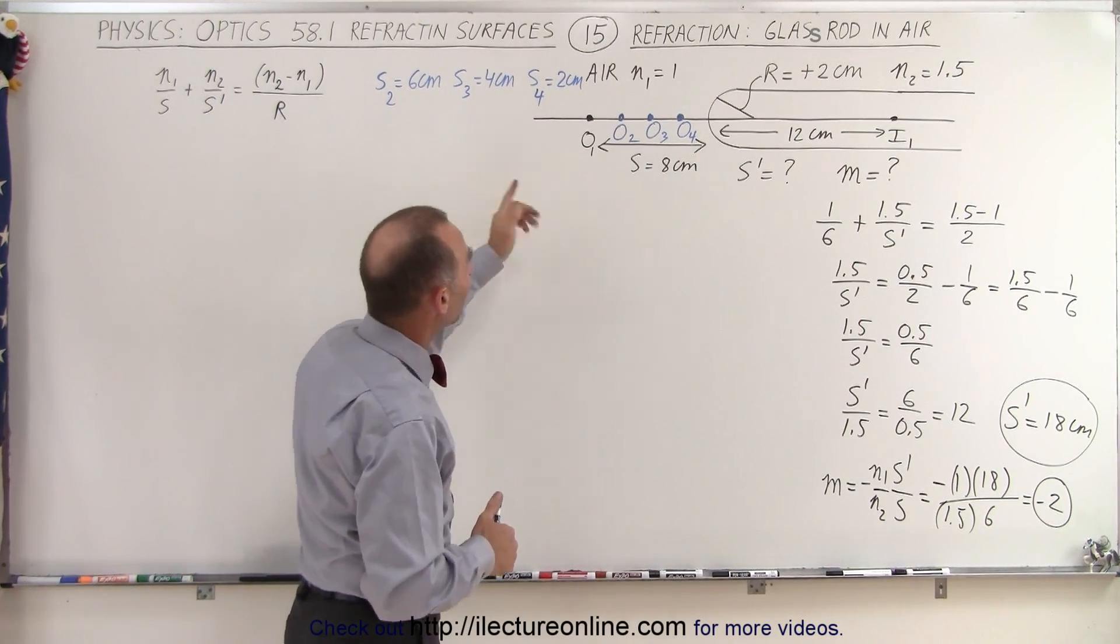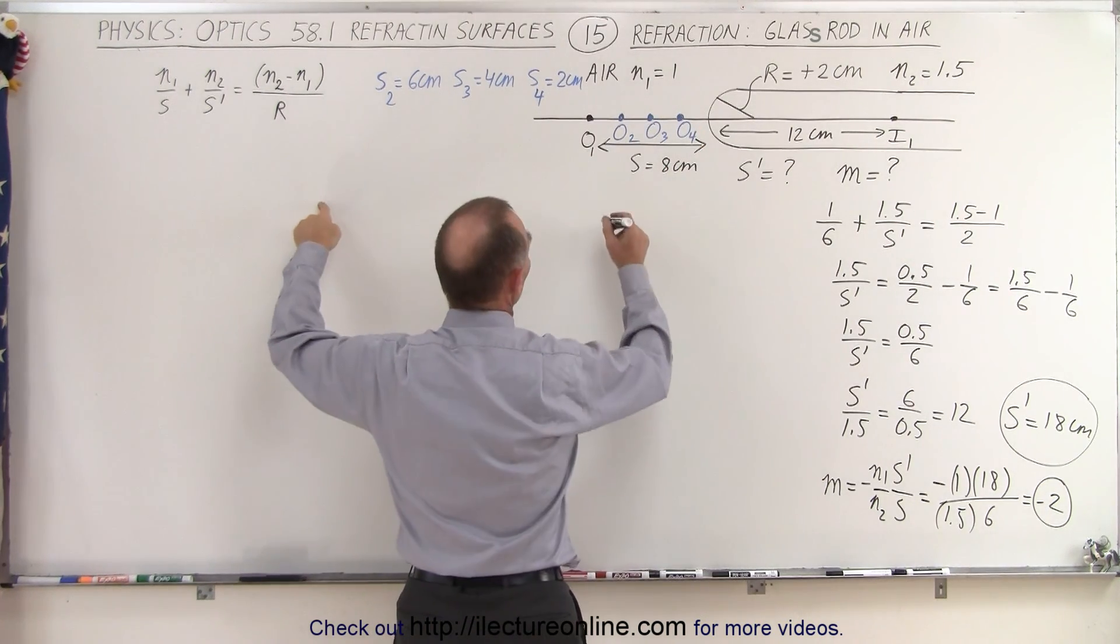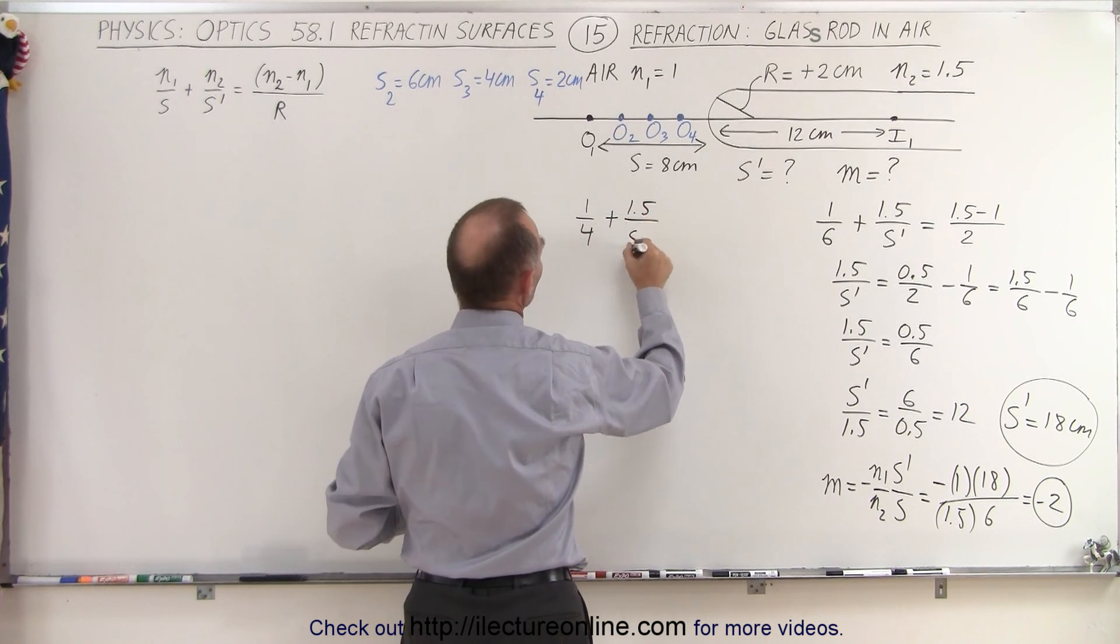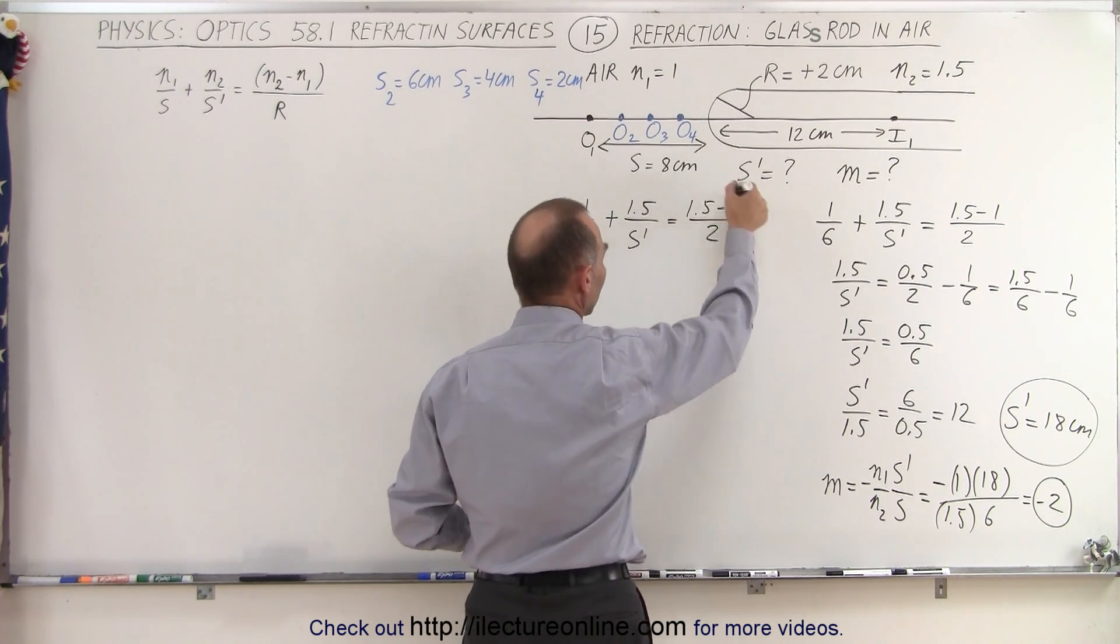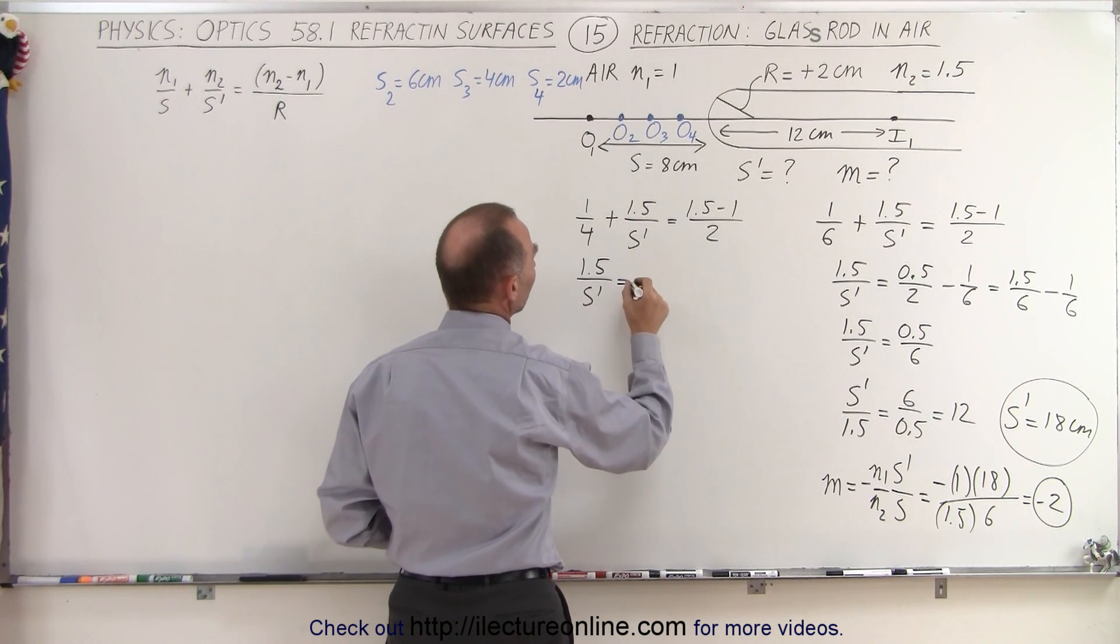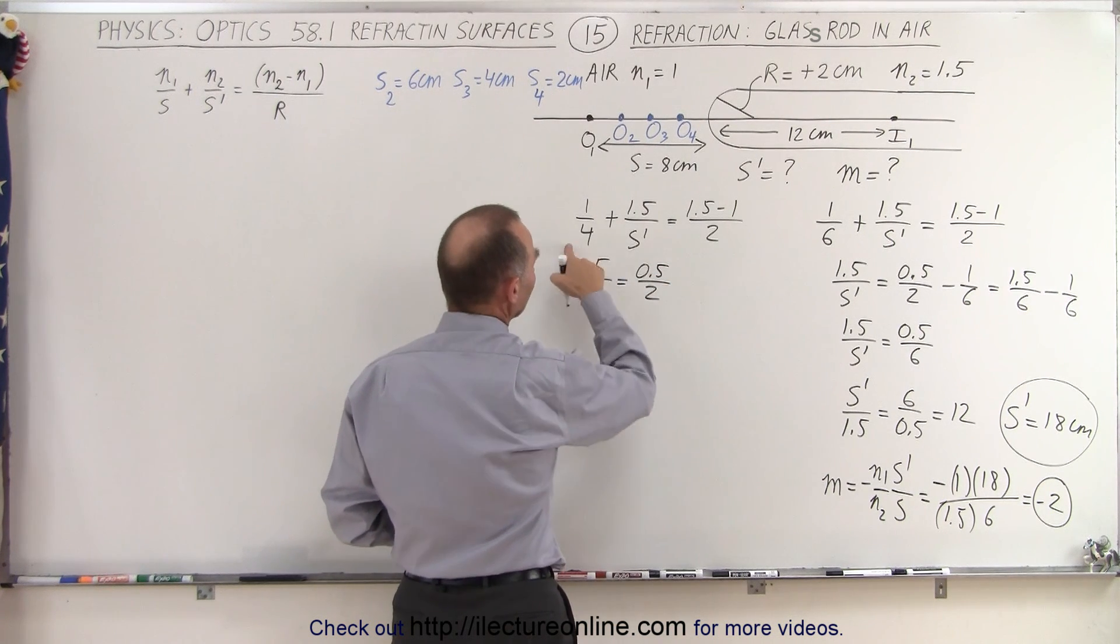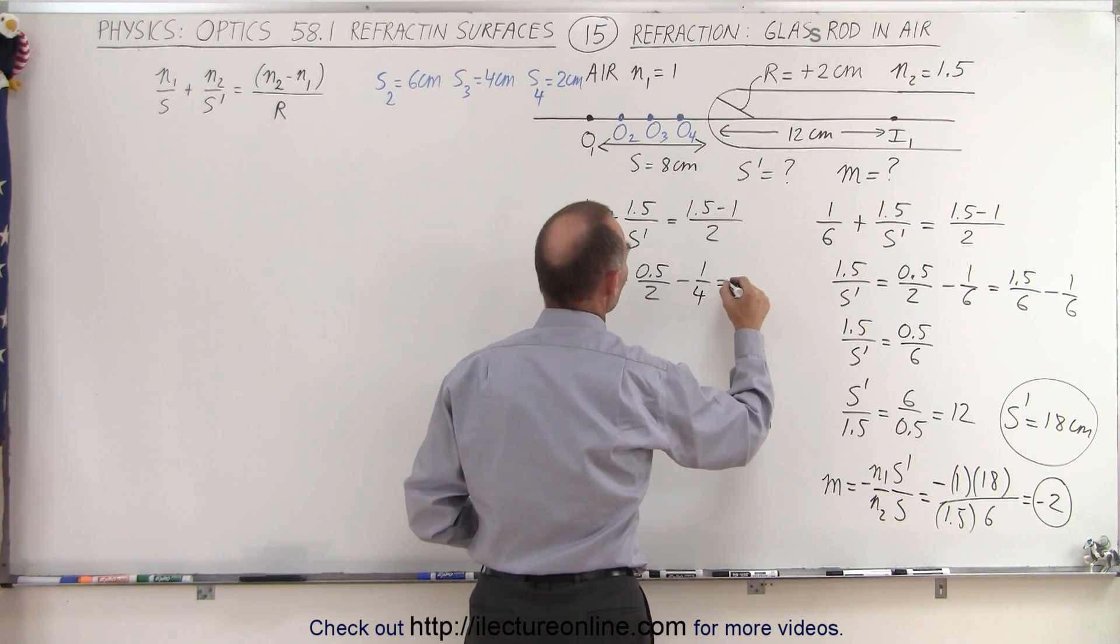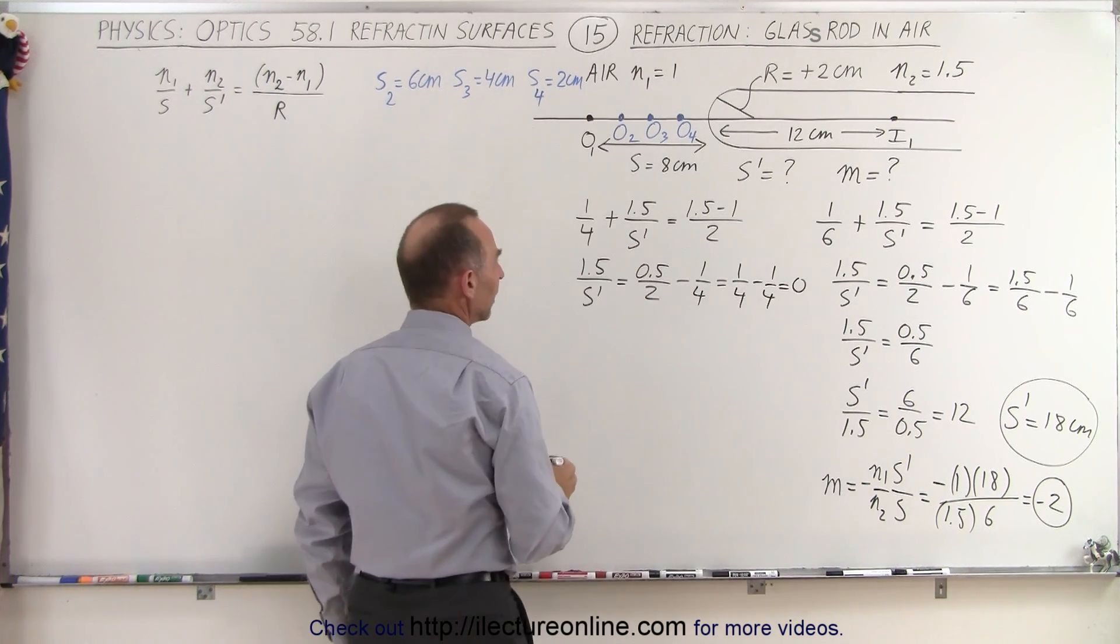So now let's move the object to a point that's 4 centimeters away from the boundary. So in this case, using the equation, we put 1 over 4 plus 1.5 over s prime, it's going to be equal to 1.5 minus 1 over 2. Notice that this is always going to be the same. So 1.5 over s prime is going to be equal to 0.5 over 2, and then move that across, we get minus 1 over 4.